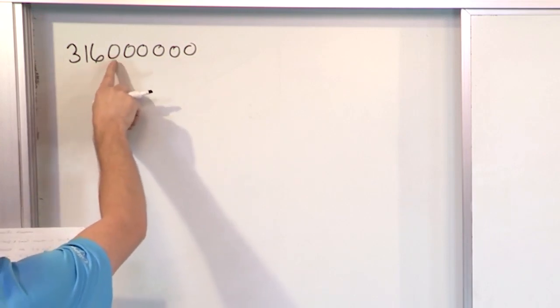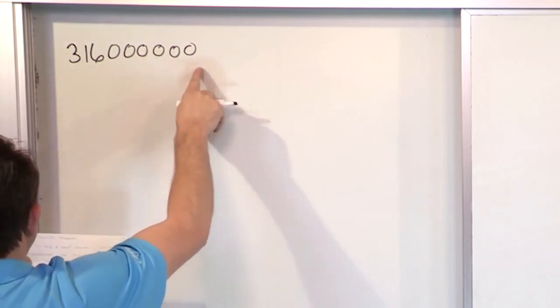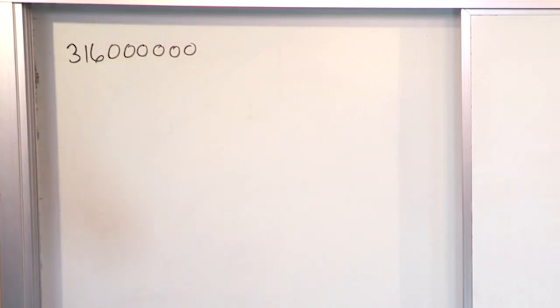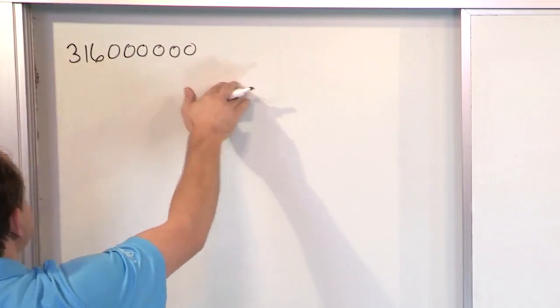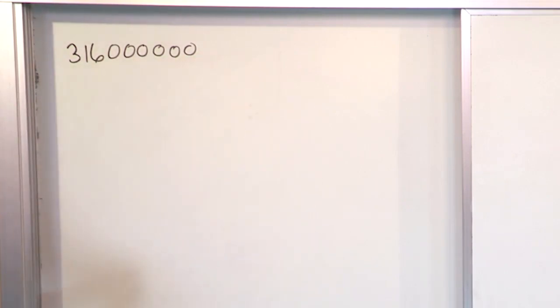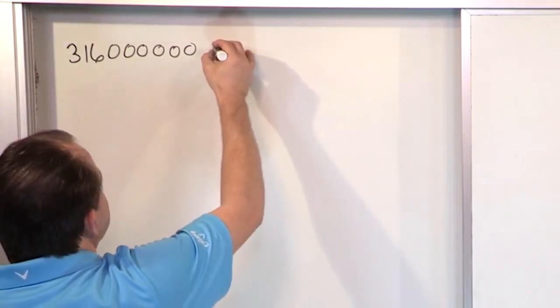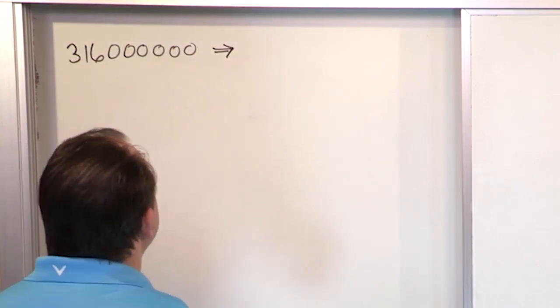Now obviously this is 316 million because here's three zeros and here's three more zeros. This is okay to write down one time, but if I'm writing a giant calculation, writing 316 million over and over, it's really painful. Let me show you how we do it, and then I'll explain why it works.